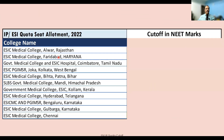These are the colleges that participated in 2022 and were eligible for IP or ESI quota: ESI Medical College Alwar Rajasthan, ESI Medical College Faridabad, Government Medical College and ESIC Hospital Coimbatore in Tamil Nadu, ESI Kolkata, ESI Patna, SLBS Government Medical College Mandi in Himachal Pradesh, Government Medical College ESIC at Kollam Kerala, ESIC Medical College Hyderabad, ESIC Medical College Bangalore, ESIC Medical College Gulbarga, and ESIC Medical College KK Nagar Chennai in Tamil Nadu.